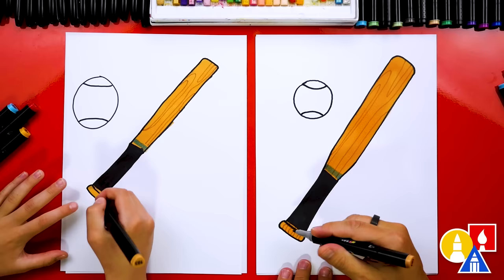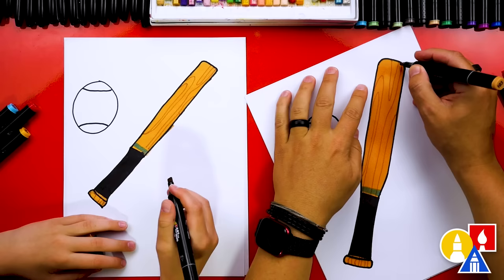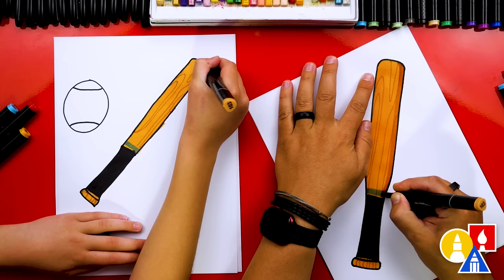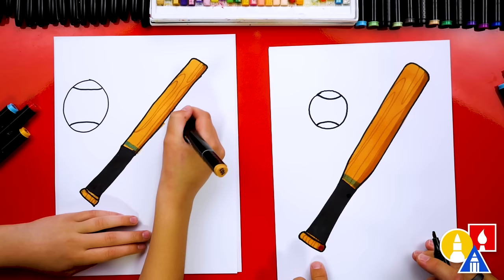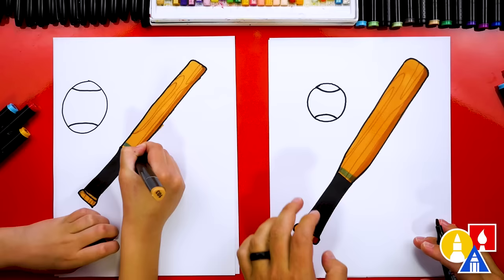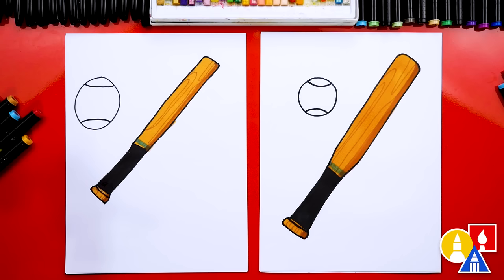Then we can switch to the chiseled side or the bigger side of our marker and add a shadow on the right side. And I'm going to go all the way down the edge like this. This will make our bat look more 3D. And then I'm going to add a little shadow down here. So we're pretending that the light is shining down, like maybe the sun, shining from this direction so the shadow's on the opposite side. That looks really good. You did a great job, Austin.